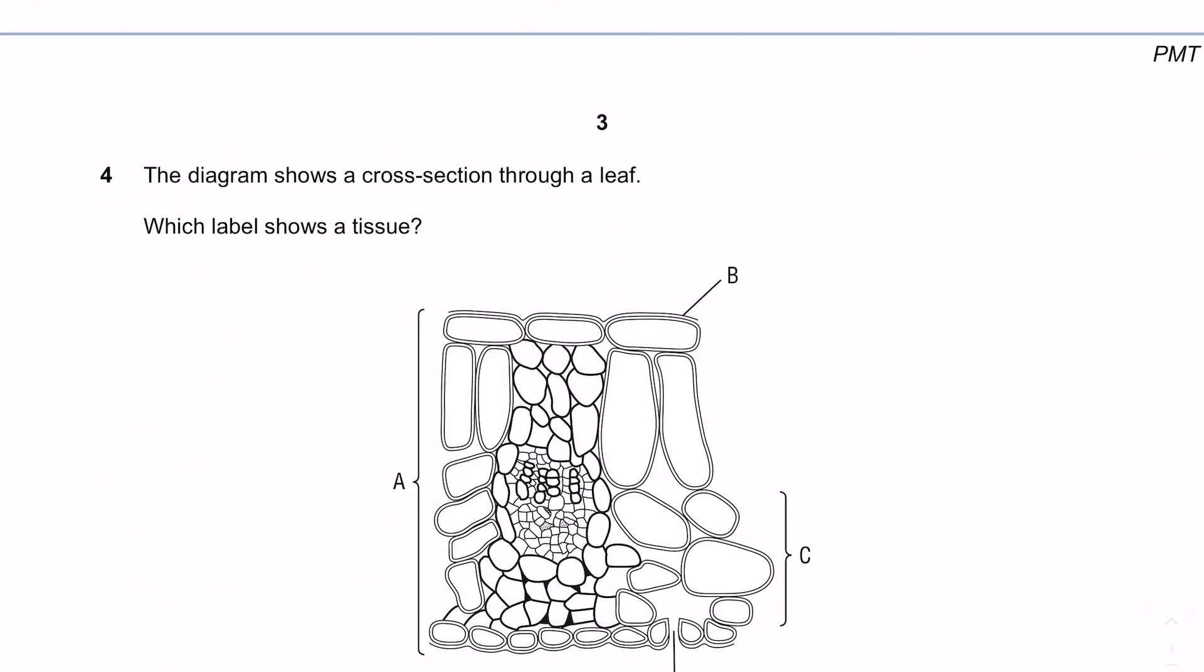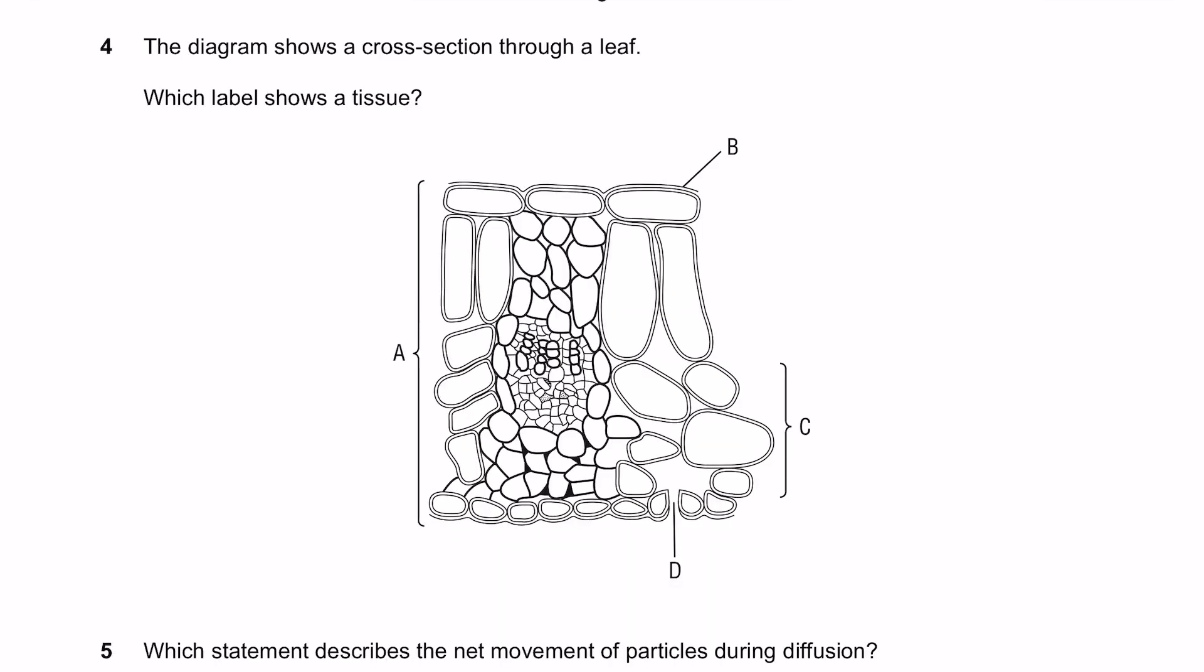The diagram shows a cross-section through a leaf. Which label shows a tissue? If we label all these other bits - this is the waxy cuticle, A is the leaf which is an organ, C is the spongy mesophyll which means that's the tissue. D is just the stomata which is a hole.